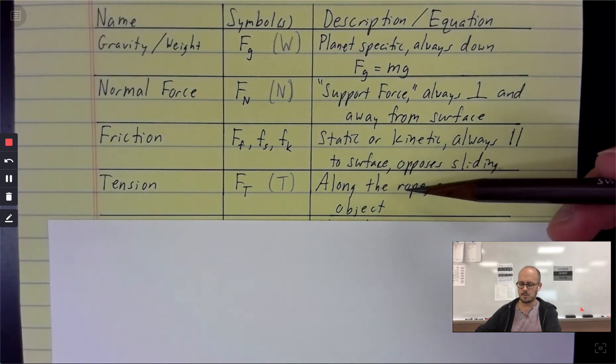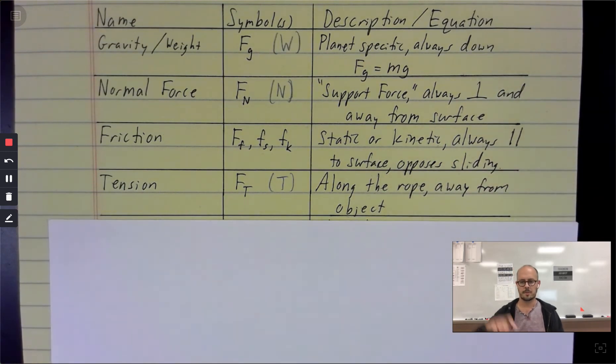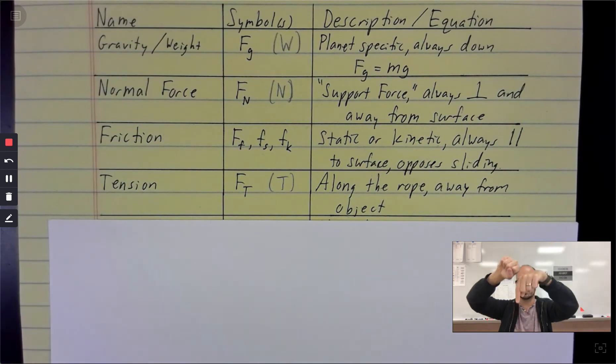So for that reason, the tension is always along the rope and away from the object. So if you're holding something by a string, there's tension in both ends. So the tension in the end that you're holding, if you're holding something from a string, that tension is pointing down. It's pulling away from you. And then the tension at the bottom of the rope is pulling up on the object that you're holding.